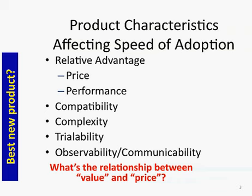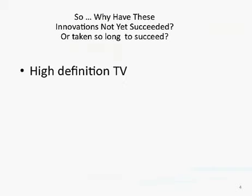Now that we've looked at what affects the speed of adoption, let's think about some inventions and see if they have become institutions yet. One is high-definition television, which you've started to see more and more in recent years, partially due to the switch in February 2009 where all televisions would have to receive digital broadcasts. High-definition TV, while not the same as digital, has been linked with that.